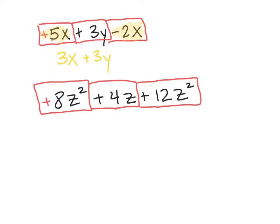Now which are like terms? Of those three terms, 8z² and 12z² are like terms — same variable to the same power. Both are positive, so if asked to put those together, simply add the coefficients: 8 + 12 = 20, giving 20z². That just leaves me with 4z. That's as simplified as I can get until somebody tells me what z is.